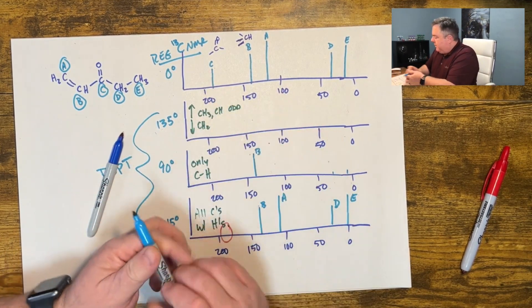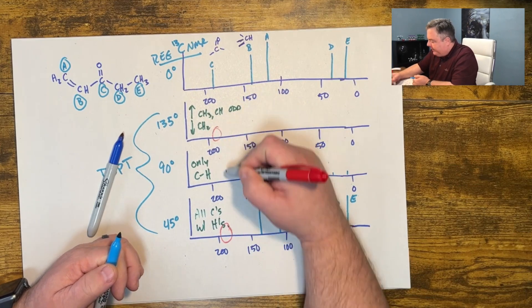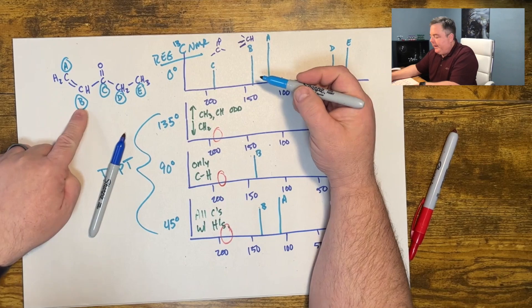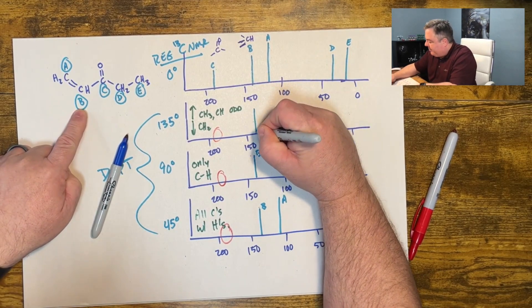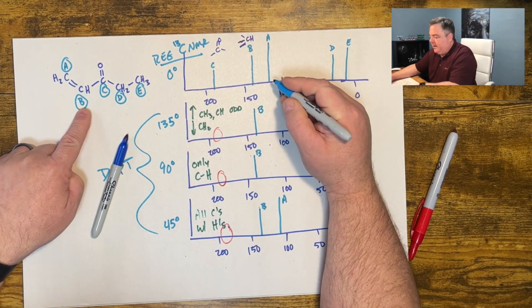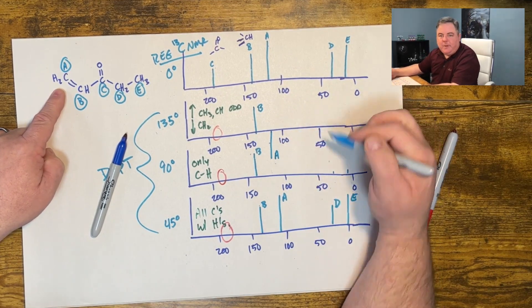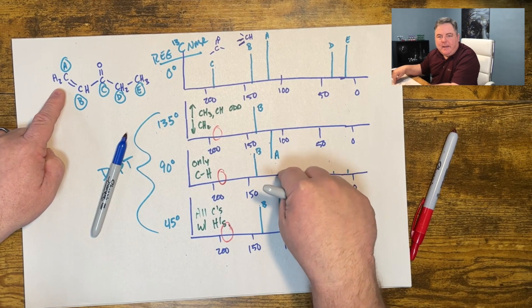Right now, this one again, my carbonyl doesn't show up in any of these because it doesn't have any hydrogens. B with the CH points up. A with the CH2 actually points down below the spectrum. So that's a key indicator.